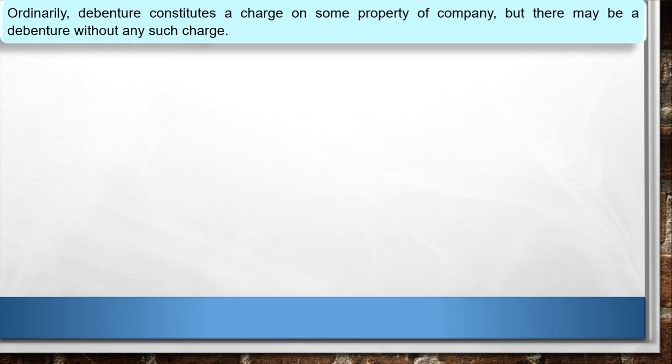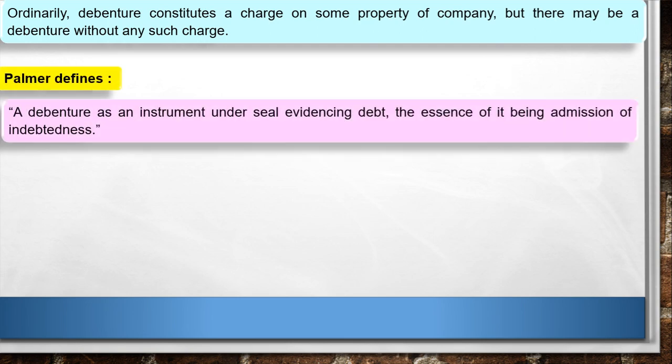Ordinarily, a debenture constitutes a charge on some property of the company, but there may be a debenture without any such charge. Palmer defines: 'A debenture is an instrument under seal evidencing a debt, the essence of it being an admission of indebtedness.' Debenture ये कंपनी ने लिया हुआ debt का sealed instrument है, जिसके essence में indebtedness की कबूली देना है.